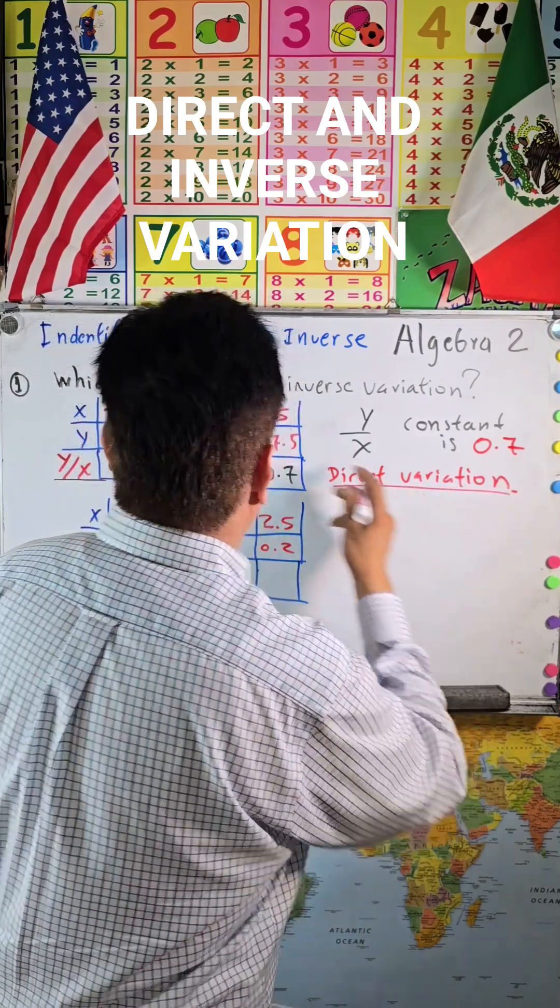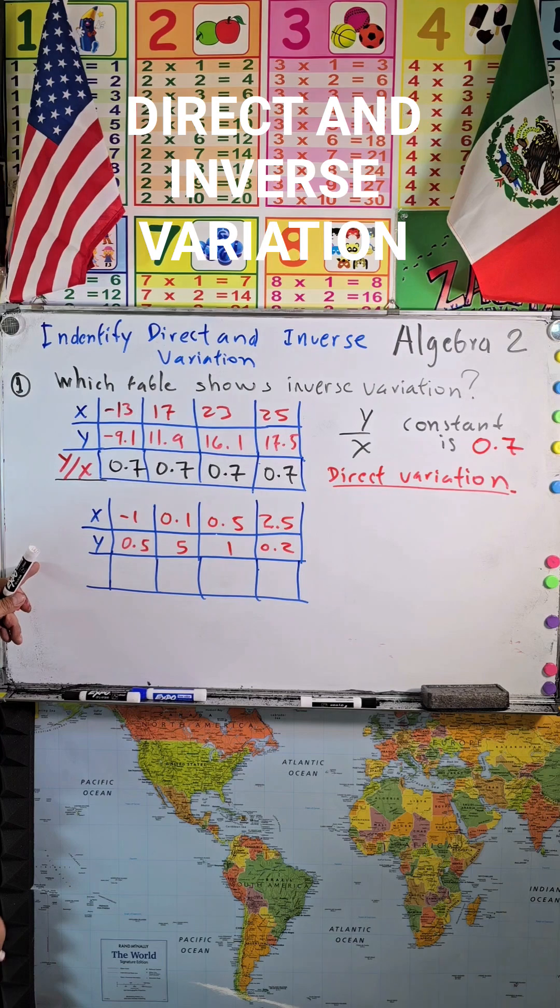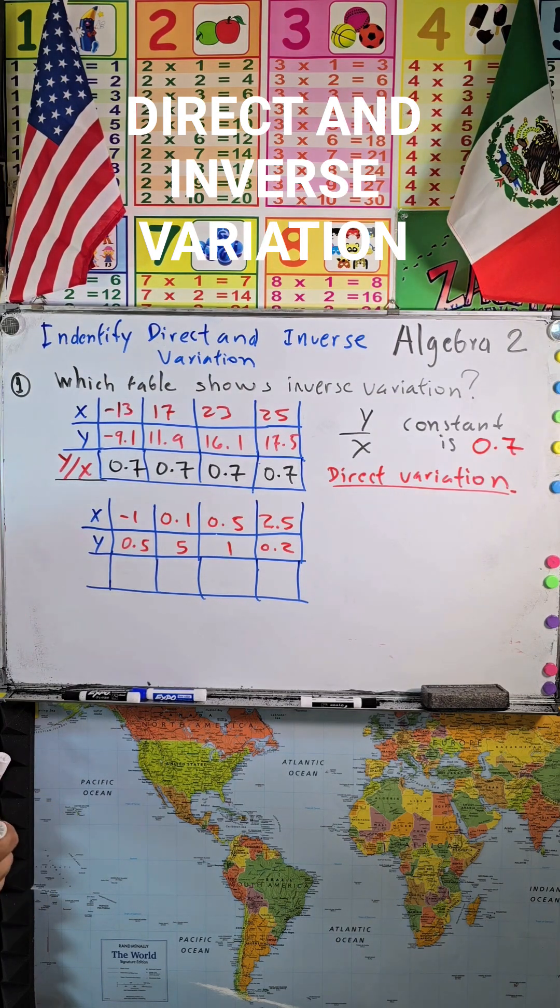This was the answer for our first question. Let me solve the second one. The second table shows inverse variation.